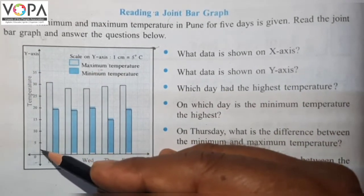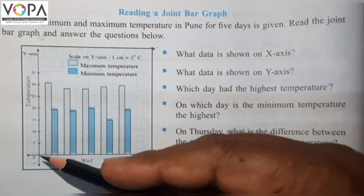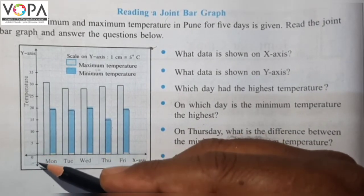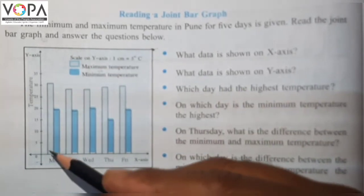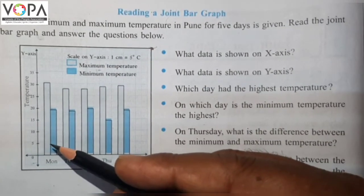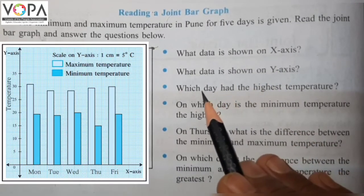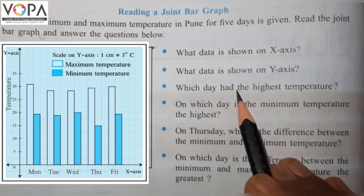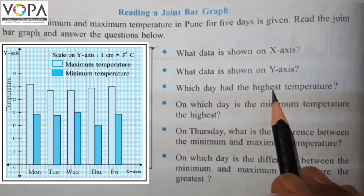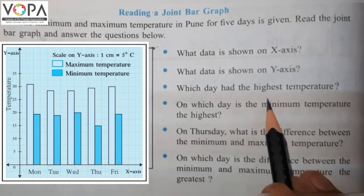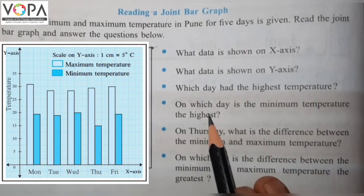The answer is temperature is shown on the y-axis. Now question number 3: which day had the highest temperature? The answer is Monday.